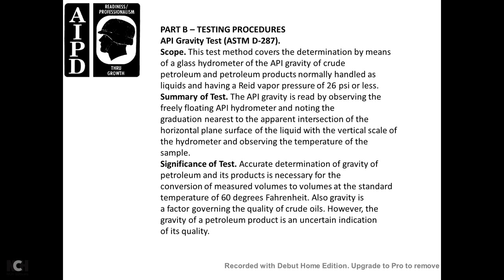Part B: Testing Procedures. API Gravity — ASTM D287. Scope: covers determination by glass hydrometer of the API gravity of crude petroleum and petroleum products normally handled as liquids having a Reid vapor pressure of 26 psi or less. Summary: the API gravity is read by observing the free-floating API hydrometer, noting the graduation at the apparent intersection of the horizontal liquid surface with the vertical scale. Temperature must be adequately determined. Significance: gravity is necessary for conversion to volumes at the standard temperature of 60°F and governs the quality of crude oil products.